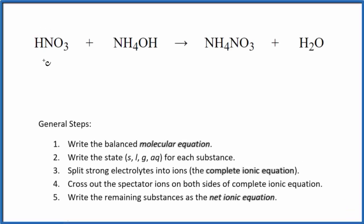In this video, we'll write the balanced net ionic equation for HNO3 plus NH4OH. This is nitric acid. This is ammonium hydroxide. First, we need to balance the molecular equation. This equation is already balanced.